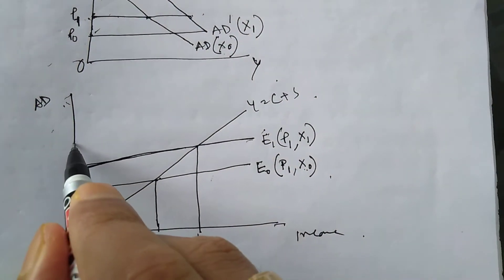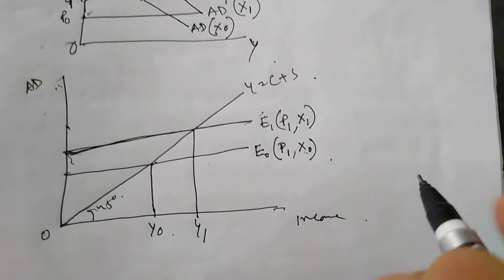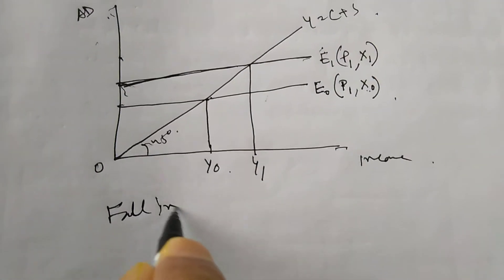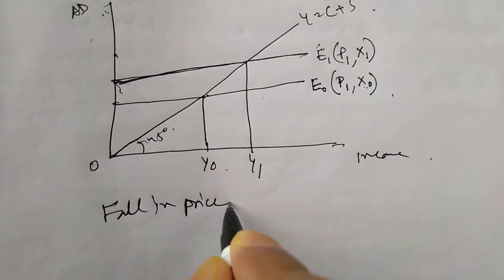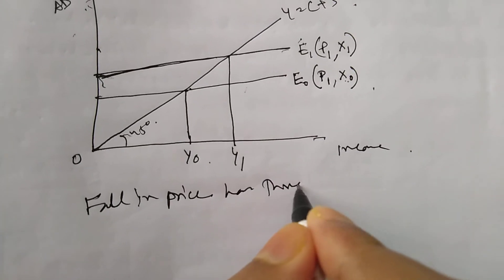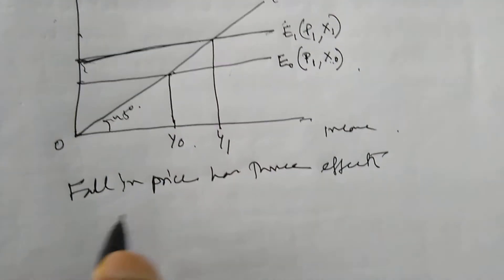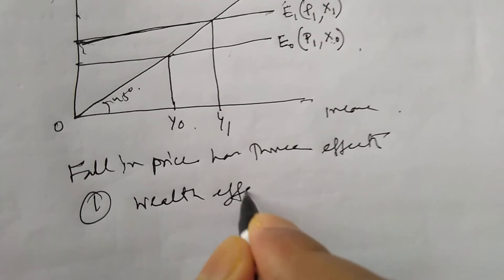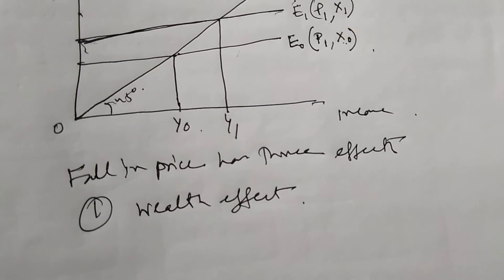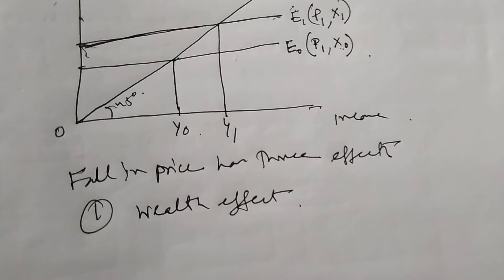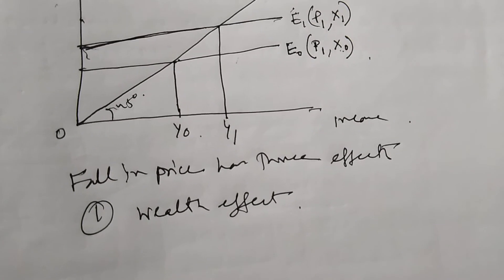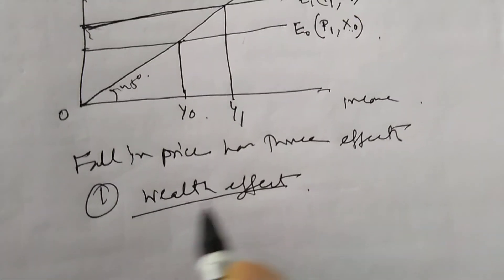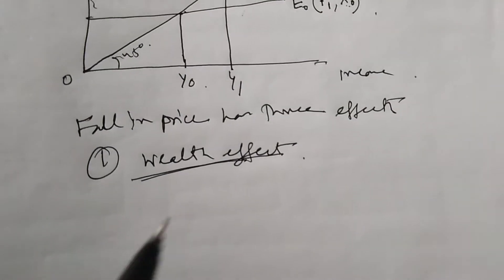Fall in price has three effects. Number one is called the wealth effect. Wealth effect means when price falls, the demand will be more because the real income of people increases, and therefore demand will increase. That is the wealth effect — aggregate demand will increase because of this wealth effect when price falls.